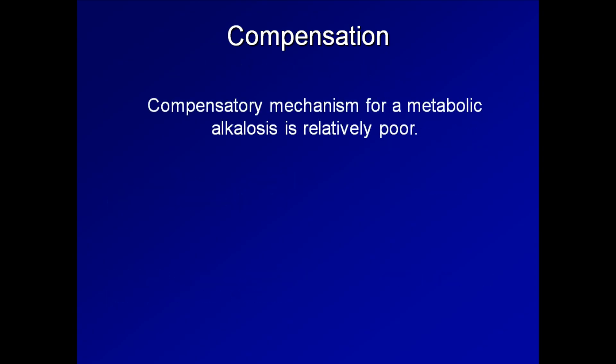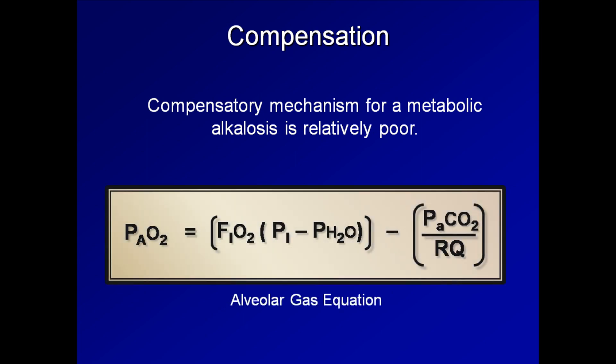The second aspect is that the body's compensatory mechanisms for a metabolic alkalosis are relatively poor compared to the other three major classes. The body compensates by decreasing ventilation and increasing pCO2, but as the alveolar gas equation shows, increasing pCO2 necessarily decreases pAO2, leading to a lower arterial partial pressure of oxygen. In patients with normal gas exchange at baseline, hypoxia is a strong stimulus to breathe more, and this hypoxia-induced desire to increase ventilation significantly blunts the hypoventilation driven by metabolic alkalosis.